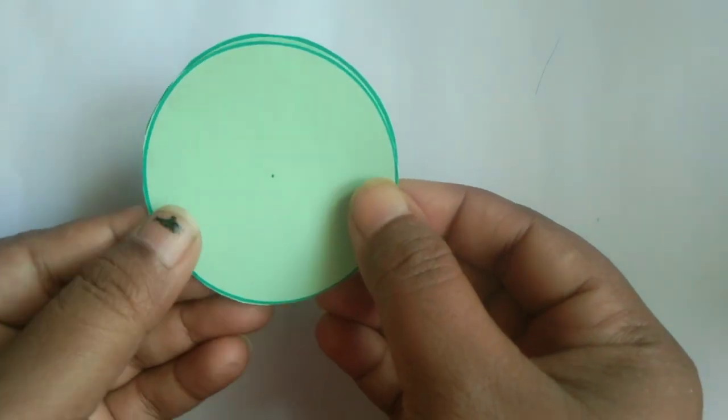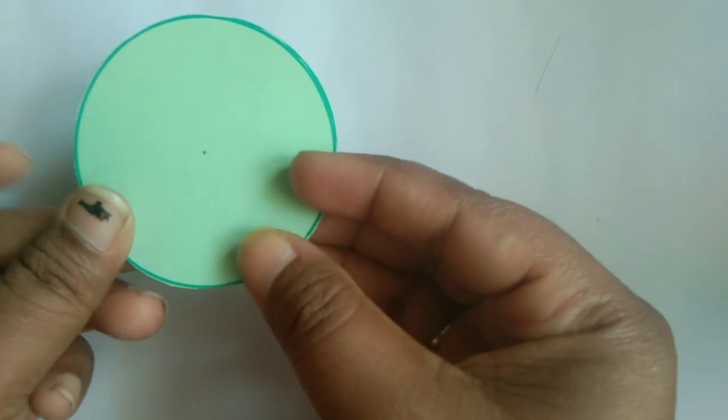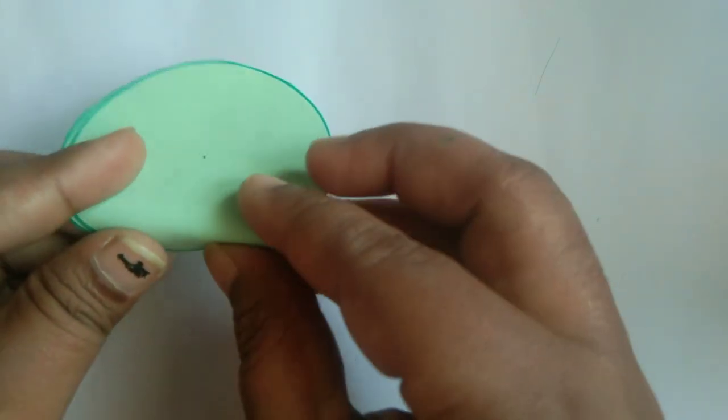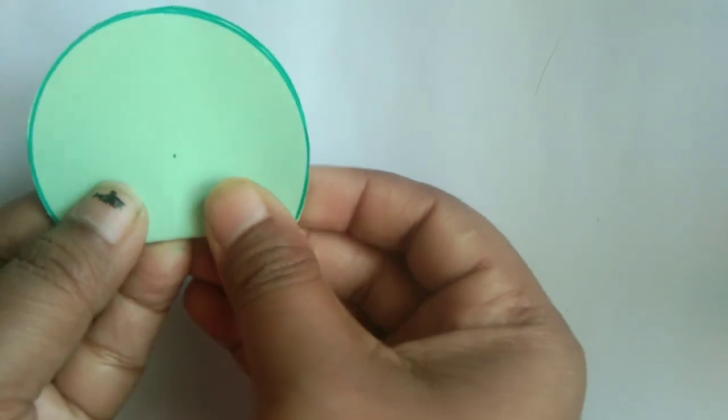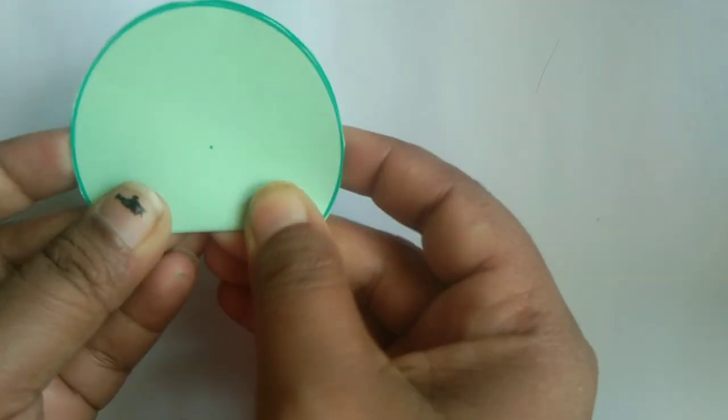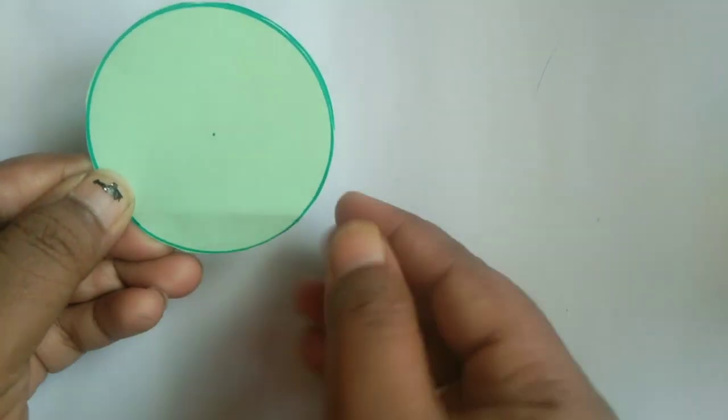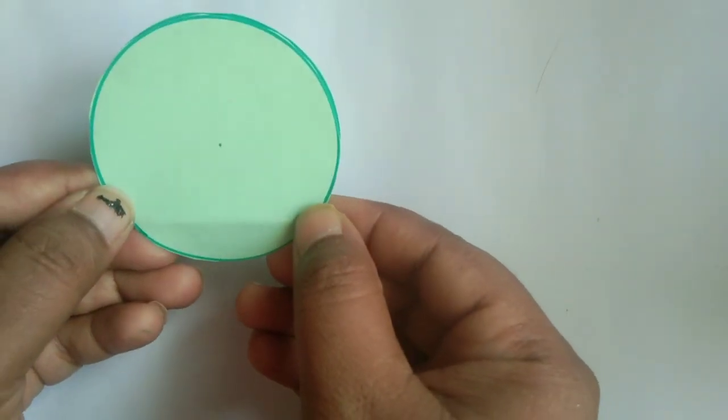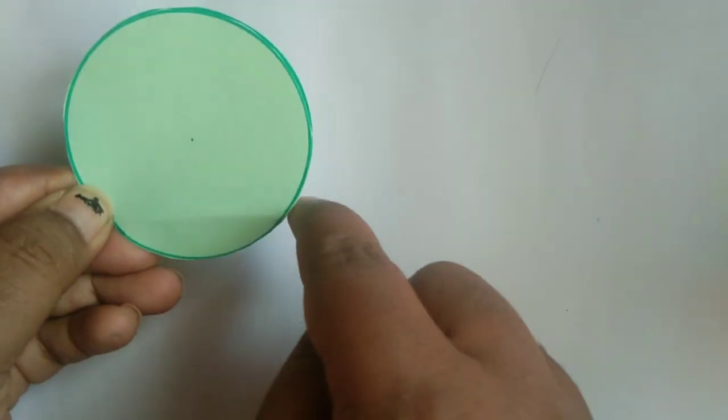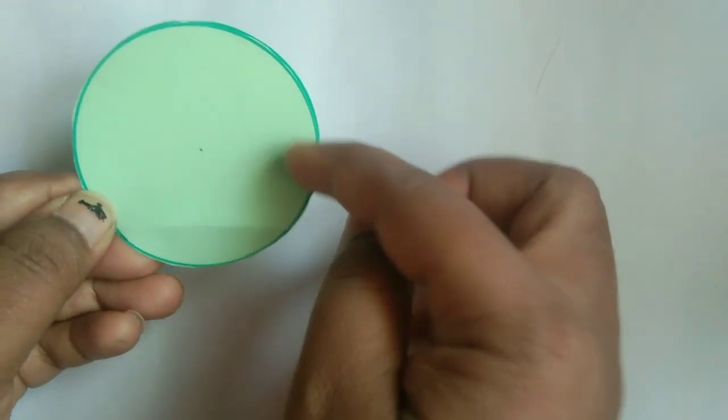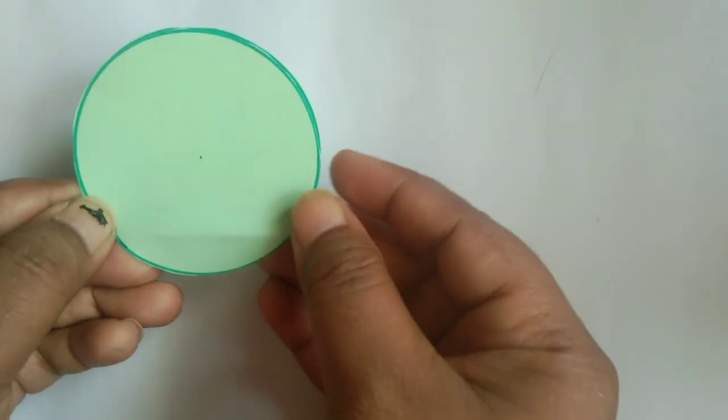Fold the circle like this so that a crease is formed. This becomes the chord of the circle. Whenever you draw a chord, it divides the circle into two parts - the major segment and the minor segment.